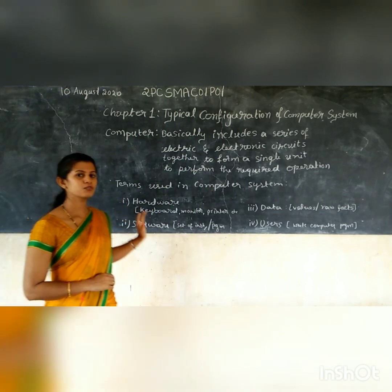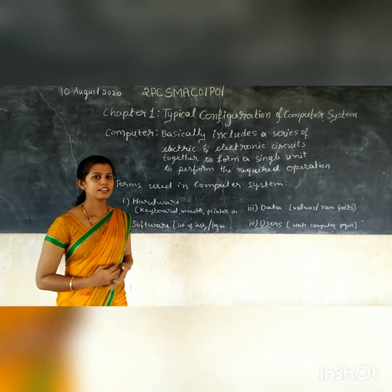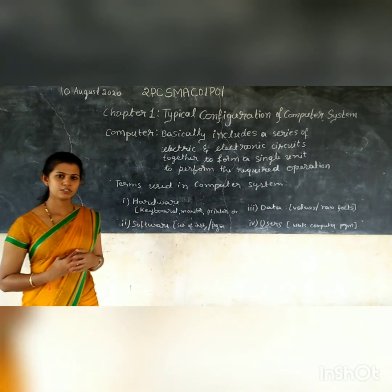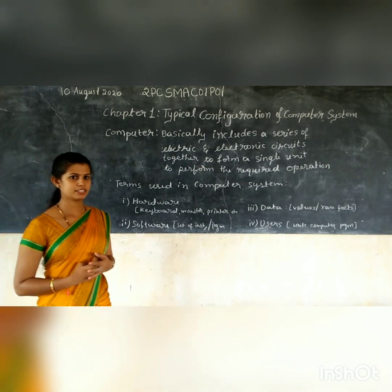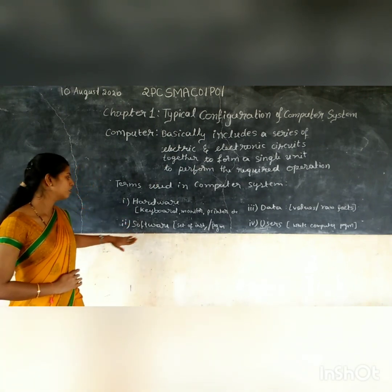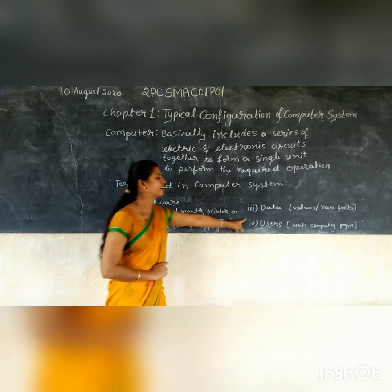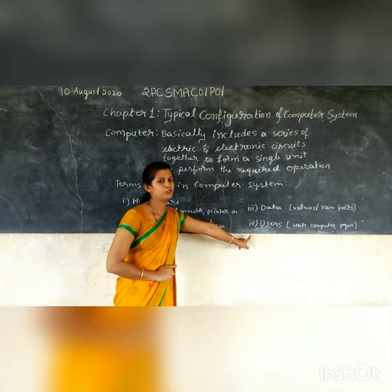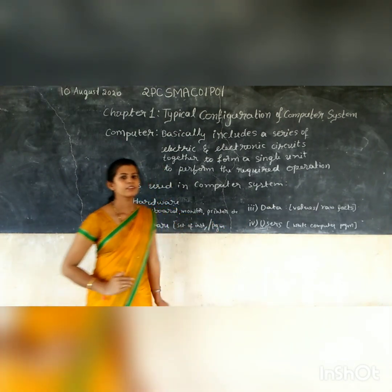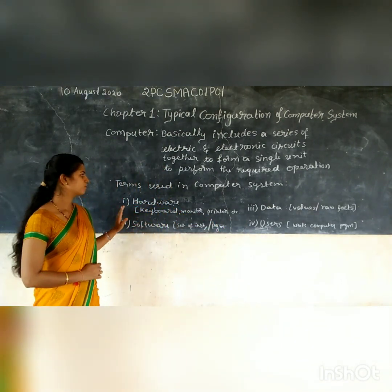The terms used in a computer system — there are four terms used in a computer system: first is hardware, software, data, and user. We will see each one by one.